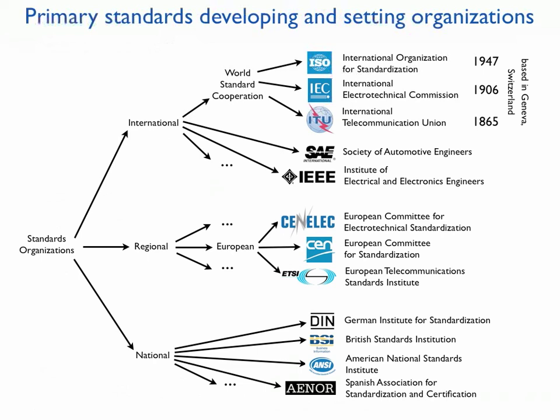Speaking about reliability standards in particular, all standards organizations — the bodies developing and setting standards — can be divided into three levels: international, regional and national. At the international level, the most well-known is World Standards Cooperation, which consists of the International Organization for Standardization (ISO), the International Electrotechnical Commission (IEC), and the International Telecommunication Union (ITU). All of them were established long ago and are based in Switzerland. Most reliability standards are developed by IEC; however, there are also other players like the Society of Automotive Engineers (SAE) and the IEEE Institute of Electrical and Electronics Engineers.